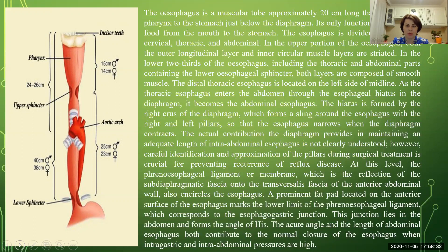The distal thoracic esophagus is located to the left side of the midline. As the thoracic esophagus enters the abdomen through the esophageal hiatus of the diaphragm, it becomes the abdominal esophagus. The hiatus is formed by the right crus of the diaphragm, which forms a sling around the esophagus with the right and left pillars, so that the esophagus narrows when the diaphragm contracts. The actual contribution the diaphragm provides in maintaining adequate length of intra-abdominal esophagus is not clearly understood.